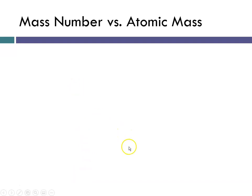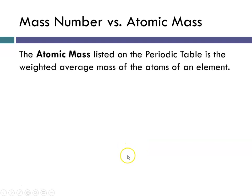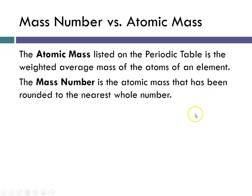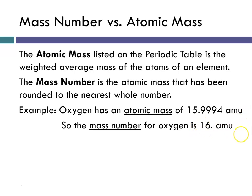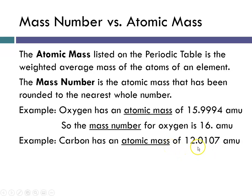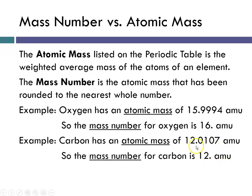What is mass number and how does it differ from atomic mass? The atomic mass listed on the periodic table is actually a weighted average mass of all the different atoms of an element, whereas the mass number is the atomic mass on the periodic table rounded to the nearest whole number. For example, oxygen has an atomic mass of 15.9994 AMUs, so its mass number would be rounded to 16. For carbon, with an atomic mass of 12.0107 AMUs, we would round the mass number to 12.